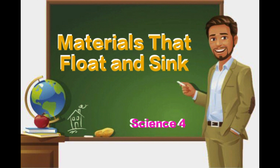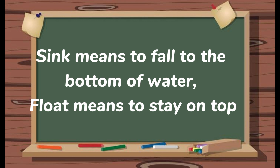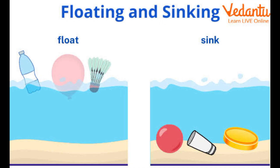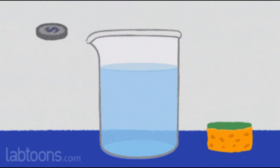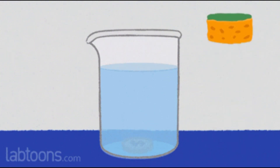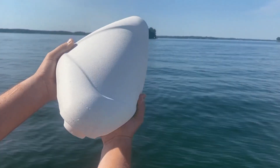Now let's go back to our main lesson: materials that float and sink. Sink means to fall to the bottom of water. Float means to stay on top. Some things float on top of water, some things stay submerged partway down, and some things sink — some very fast and some very slow.